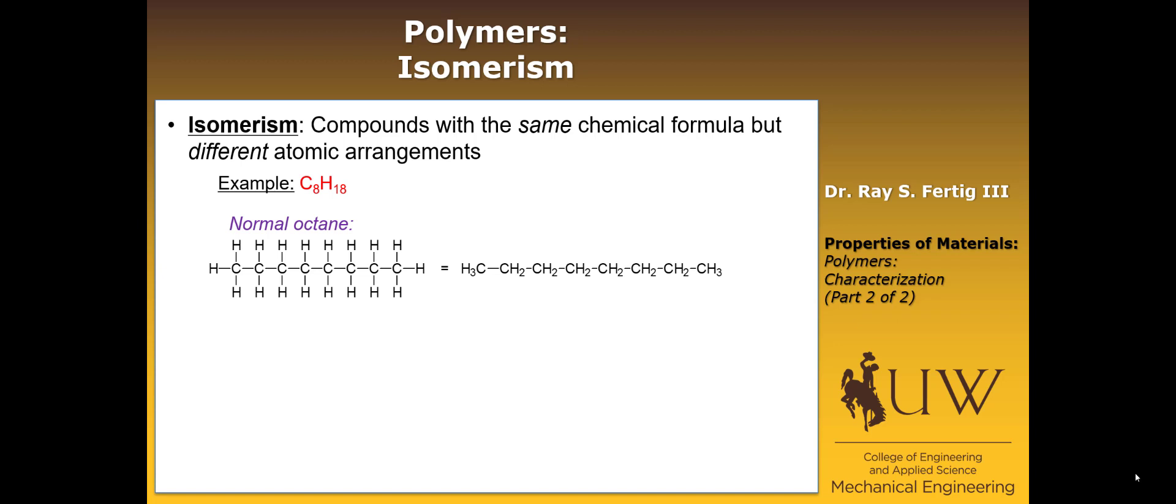And that would be normal octane. We could write that in compact form, as I've shown here, where we talk about all the chains, and we just give them a subscript number for all these CH2s that exist in the middle of this molecule. But there are other ways to arrange these atoms as well.